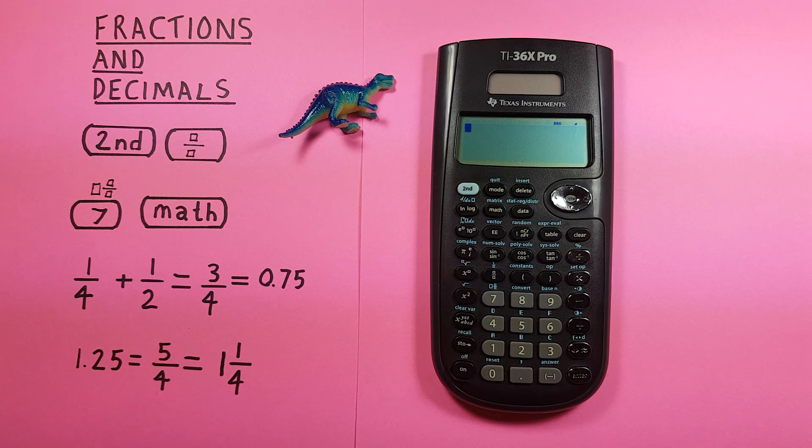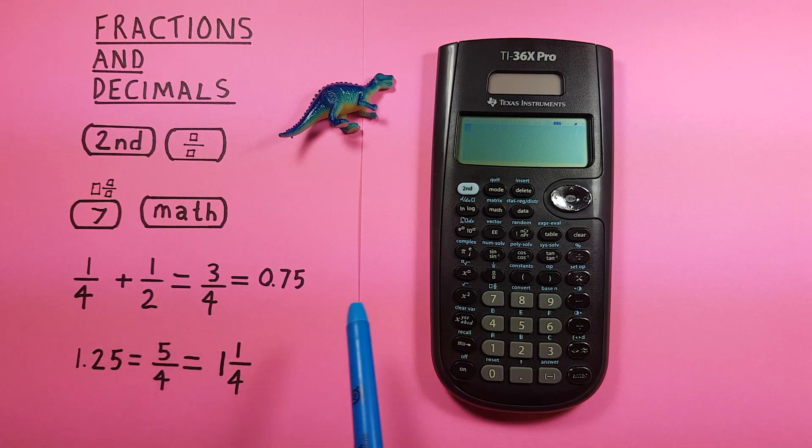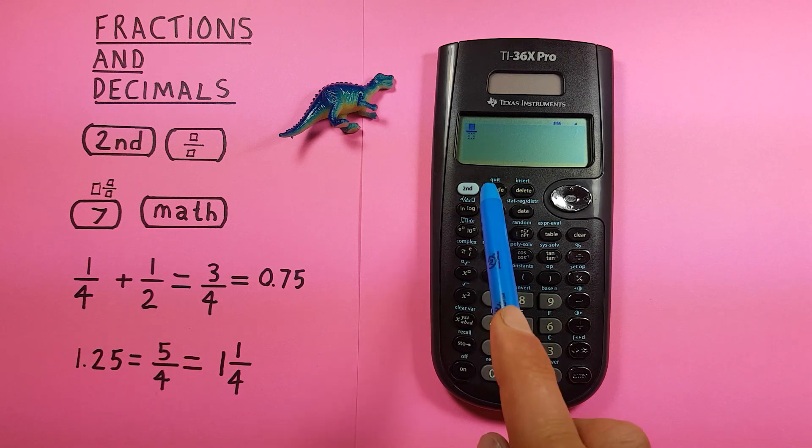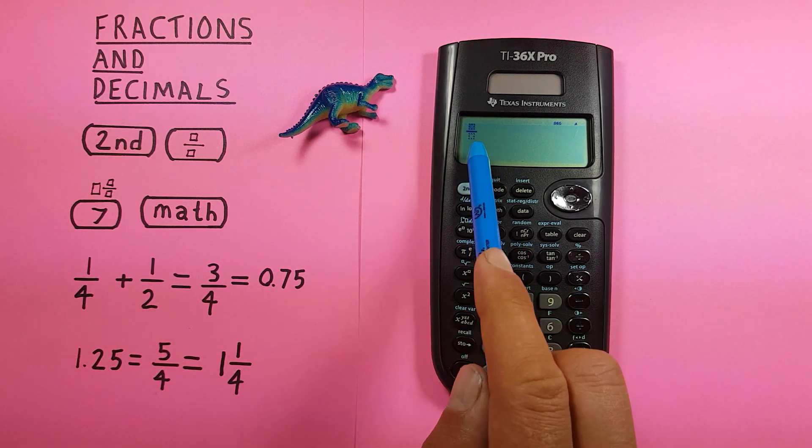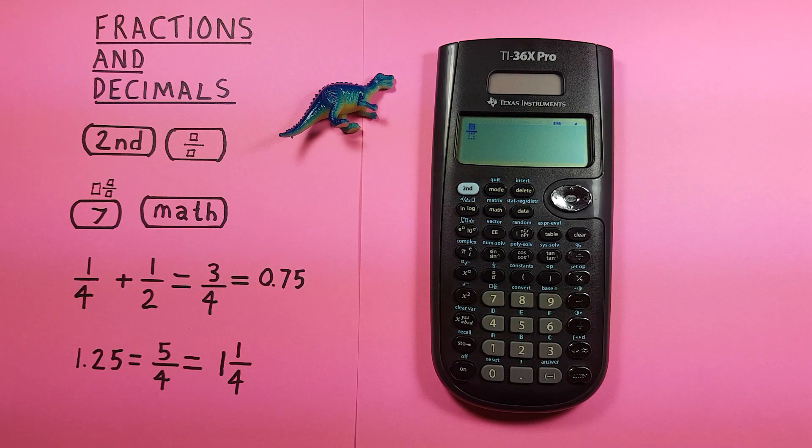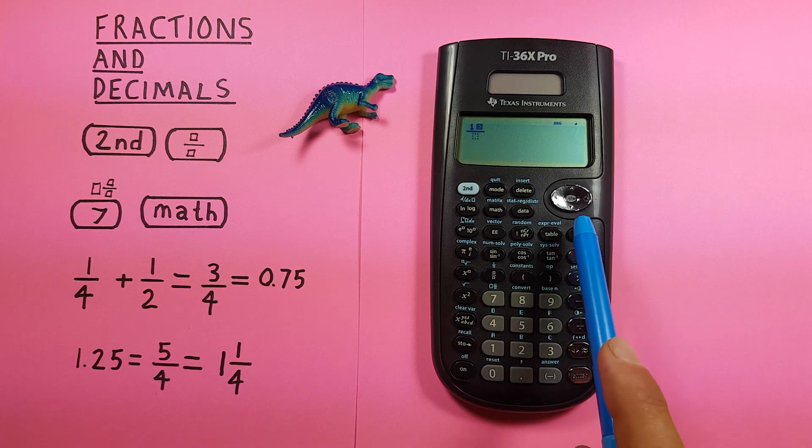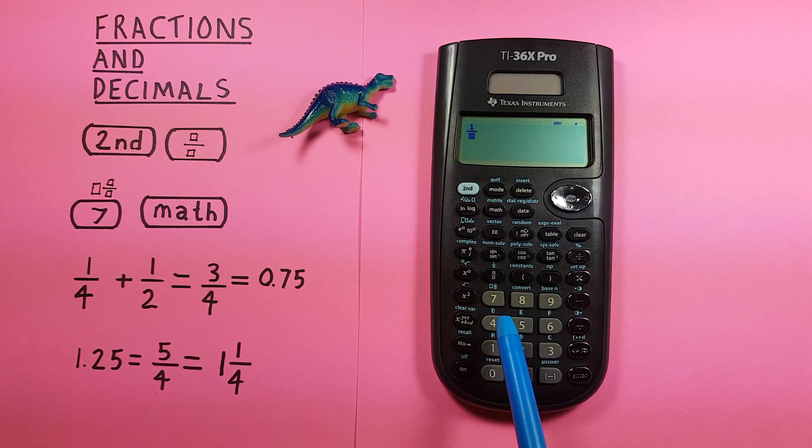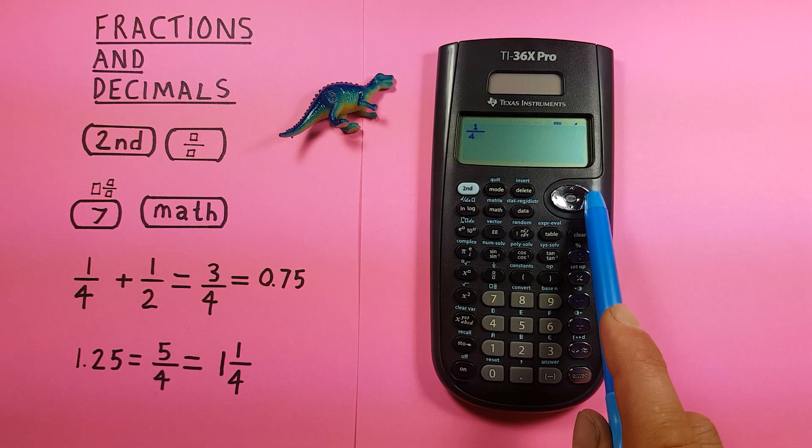To enter a fraction like 1/4 + 1/2, press the fraction key to get two boxes for the numerator and denominator. With the top box highlighted, press 1, then go down and press 4, then press the key to the right.